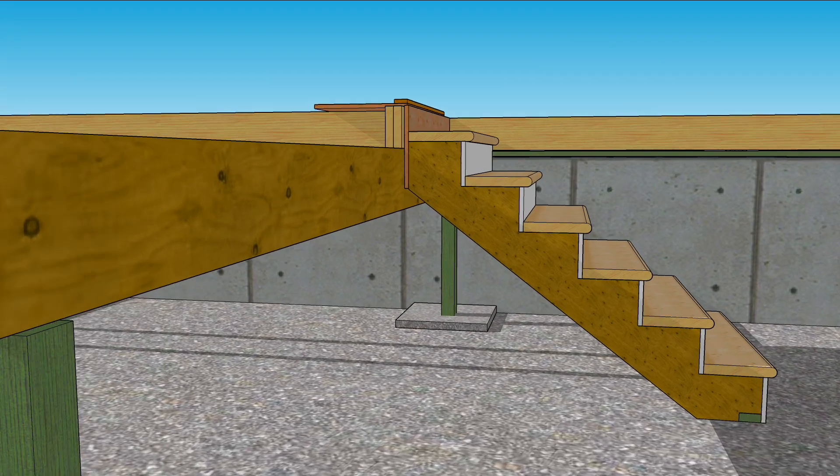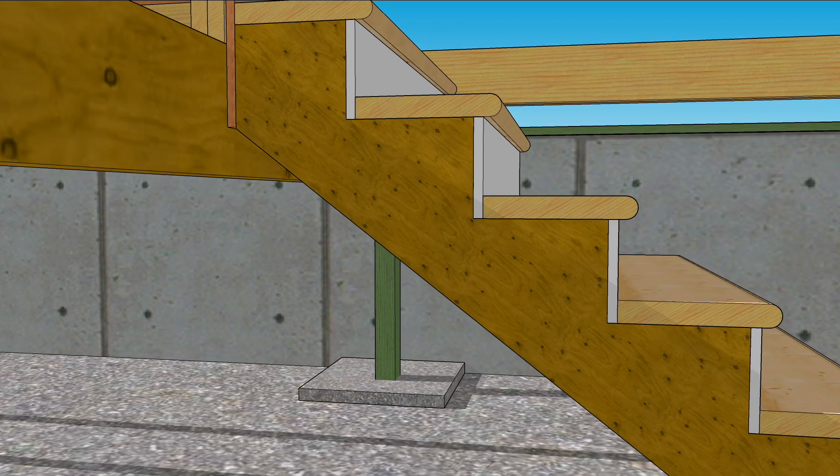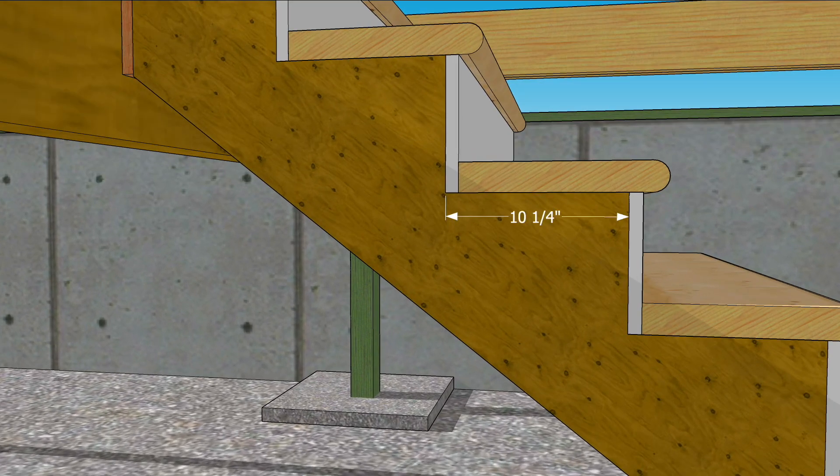If we know the utility treads are eleven and a half inches, and we want a one and a quarter inch overhang, the tread should be cut to ten and a quarter inches. So the riser is seven and eleven-sixteenths strong, the tread is ten and a quarter.